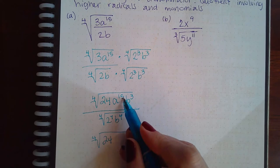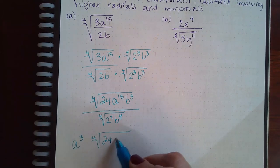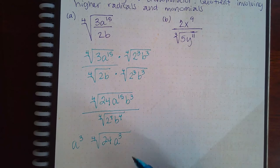A of the 15, though, can be simplified. 4 goes into 15 3 times, but then we still have 3 left over. And then 4 does not go into b3, so that's going to stay inside.